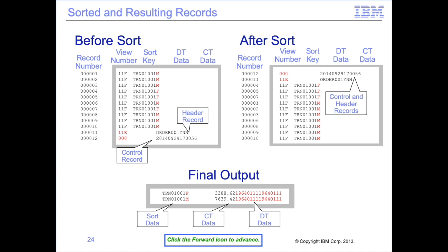The data in the extract records are moved to the final output columns and formatted correctly — for example, by applying a mask to numeric data. In this example, the CT data is moved before the DT data and decimal points are inserted. Note that in summary outputs, data in DT columns can be unpredictable. If different DT values are extracted for the same sort key combination, which value will be placed in the output file cannot be guaranteed. For example, if there are two different dates in the file, either may appear on the final output record. Thus, summary files typically contain only sort data and CT data.